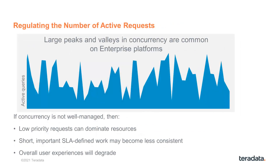Concurrency control is probably the most popular option within Teradata Active System Management. There are many uses that I have seen customers of Teradata make using what we call throttle rules. Typically, an enterprise platform is going to have an irregular pattern of concurrency.